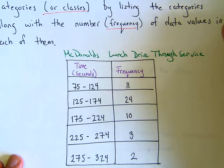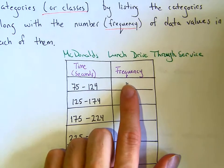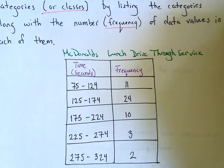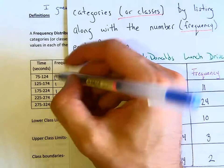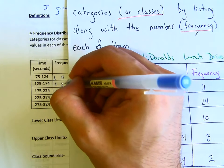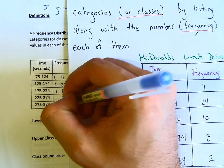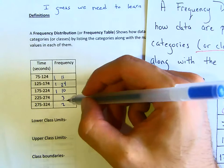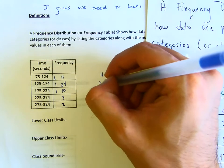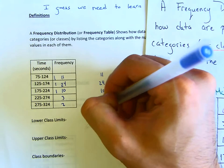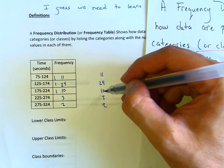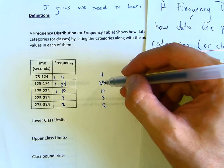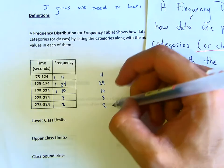If you completed it, it should look something like this: 11, 24, 10, 3, and 2. Those are the frequency values. So writing them out: 11, 24, 10, 3, and 2. These are 50 data values total, so the frequencies sum to 50.